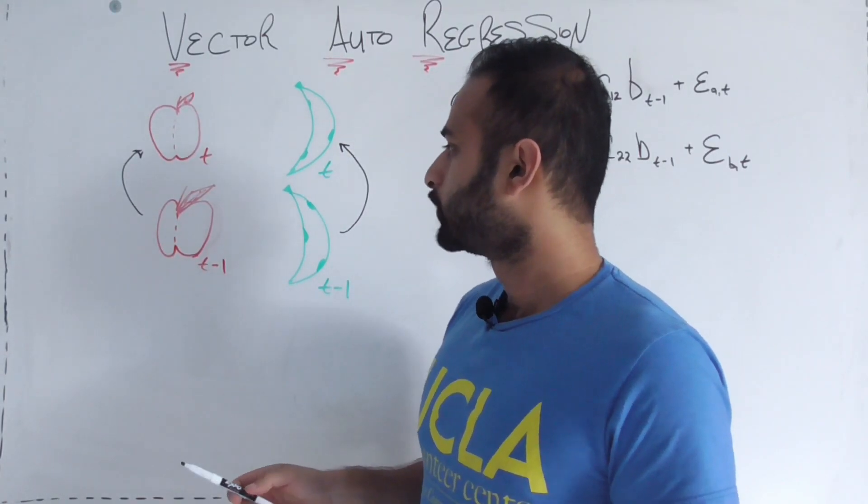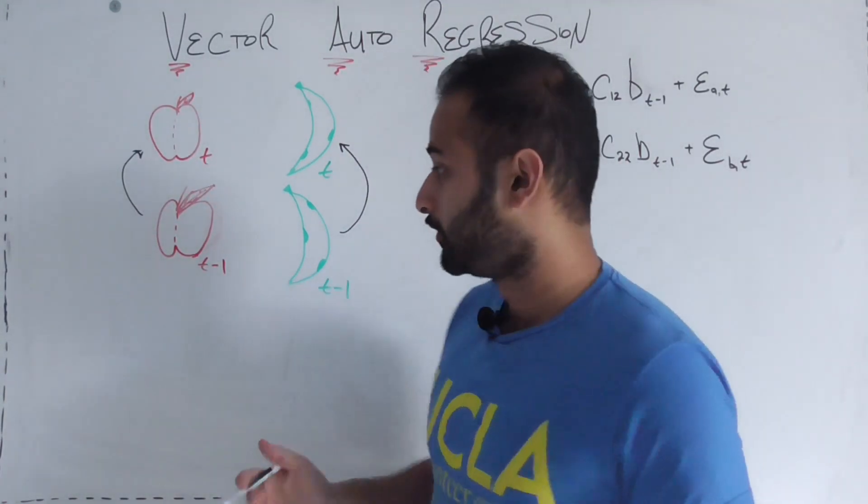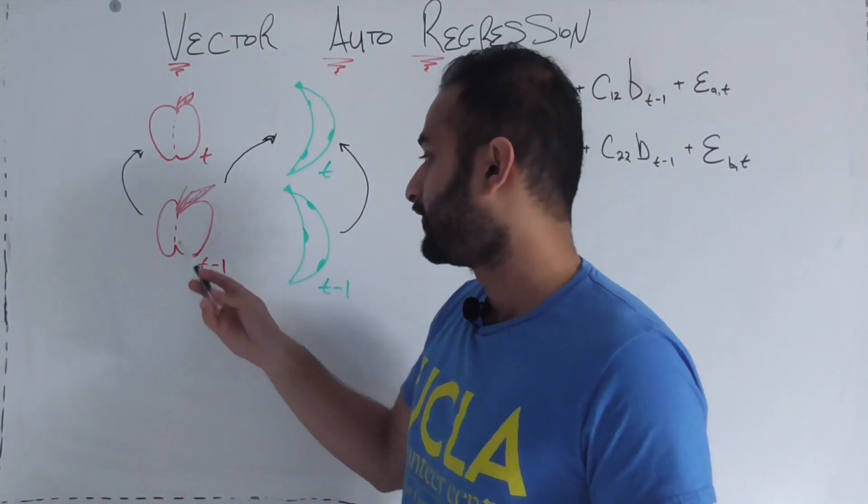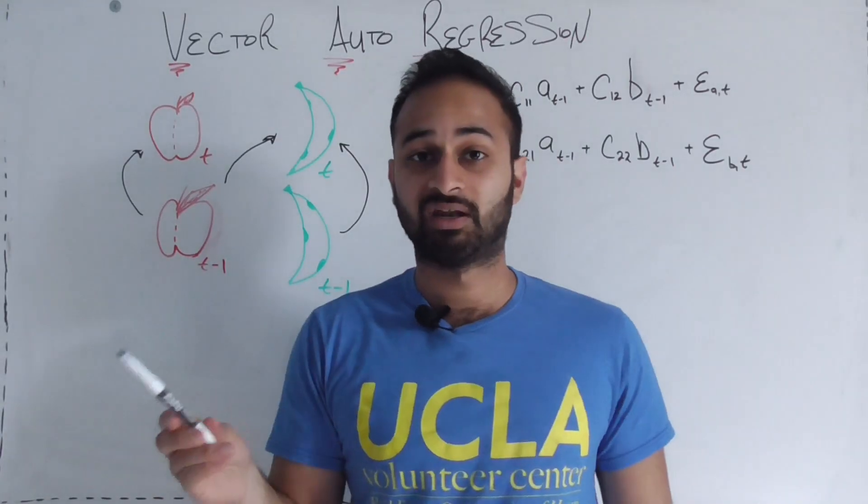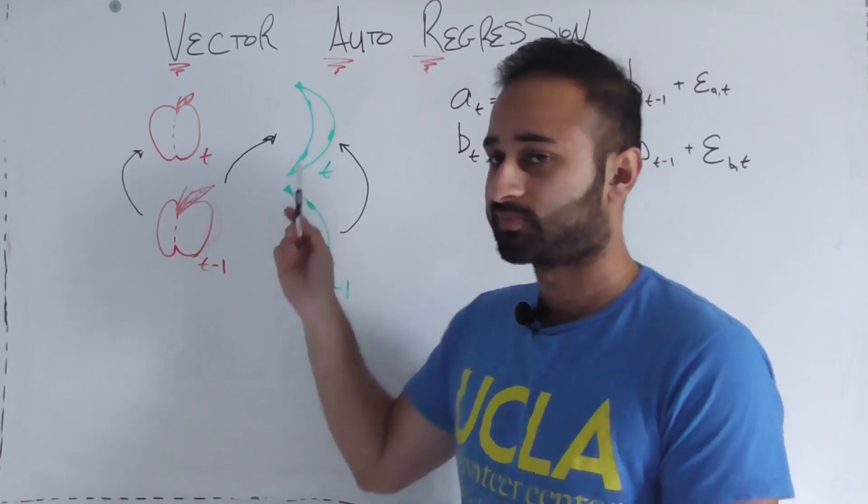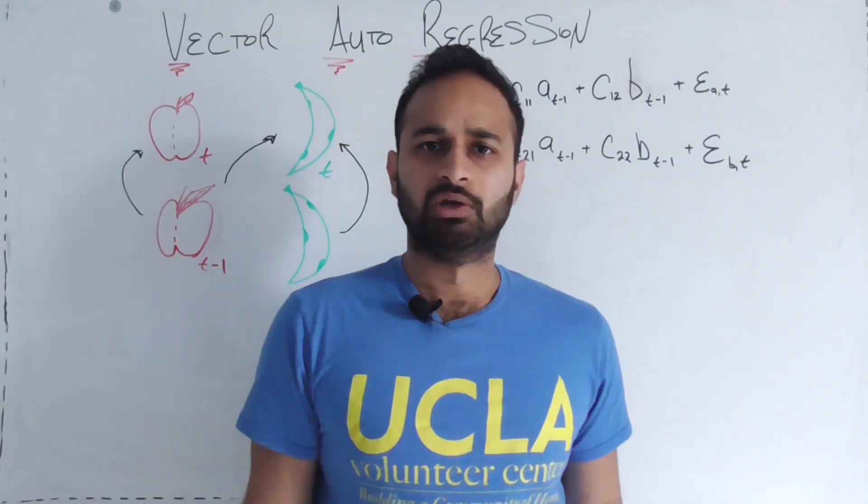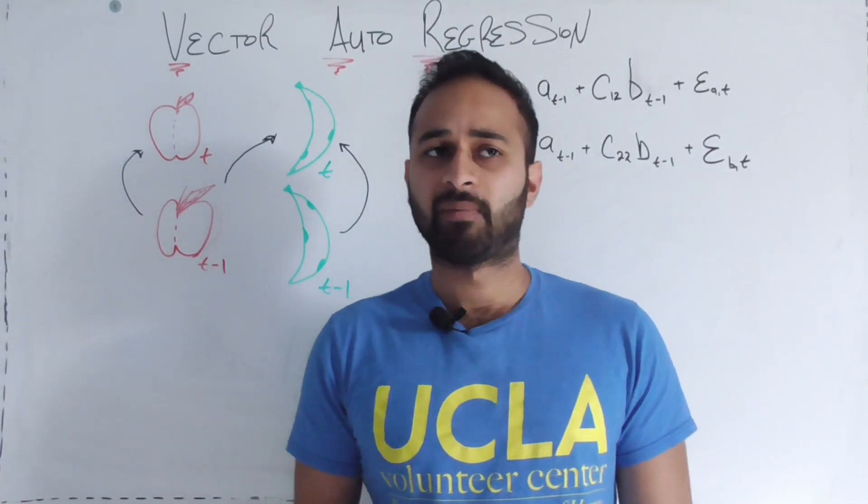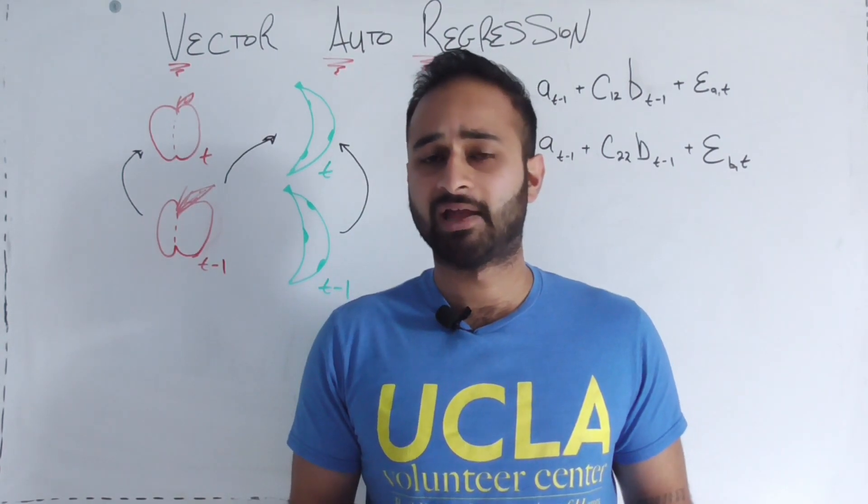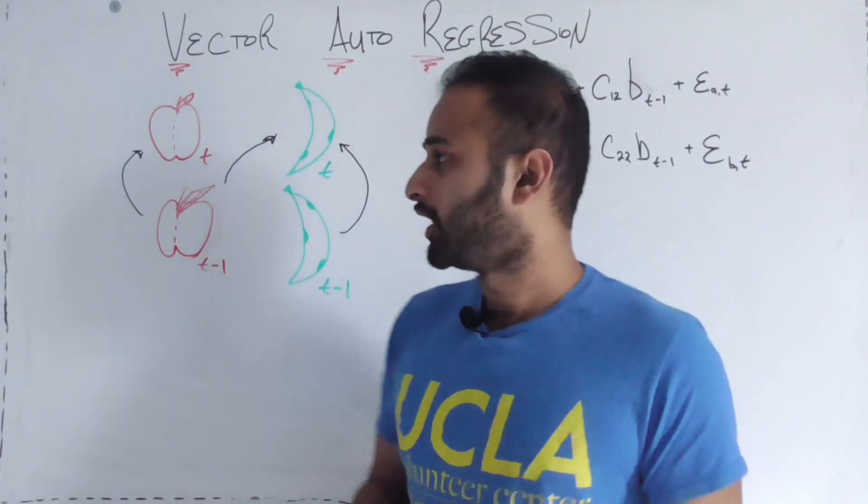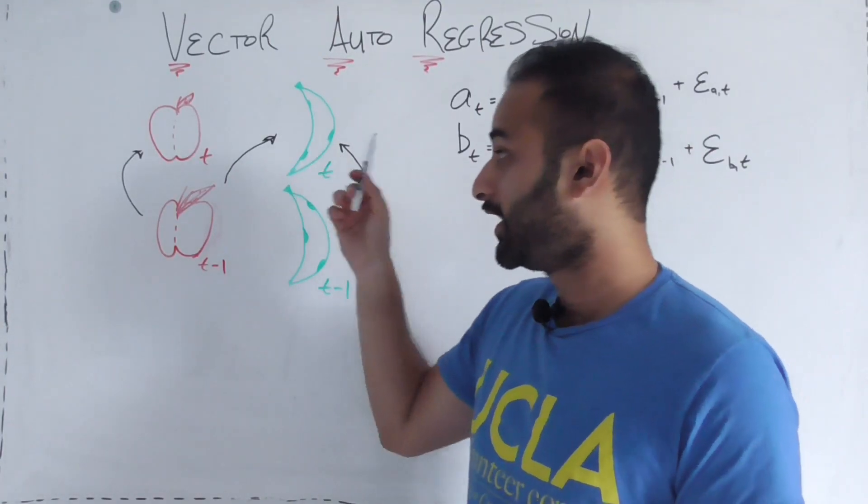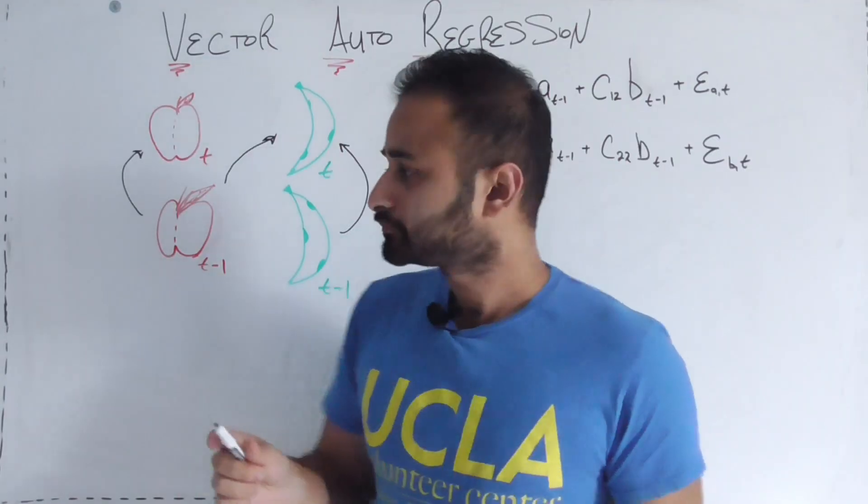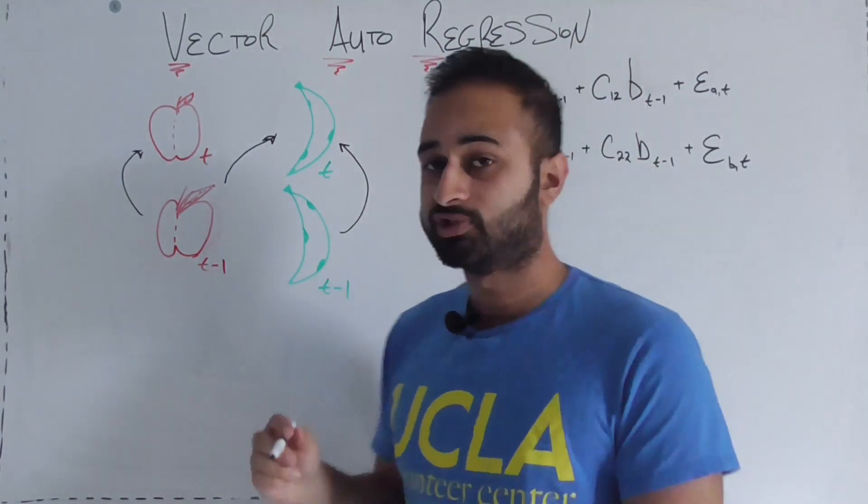Now here's where the more interesting part comes in. There's also a case to be made where the number of apples that you sold last month can affect the number of bananas that you sell this month. You could say that if there's a ton of apples being sold last month, that might mean that people are less inclined to buy bananas, maybe bananas are becoming less popular, and therefore banana sales next month or this month will be lower than usual.